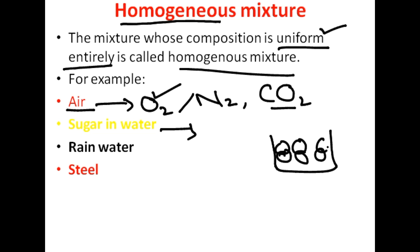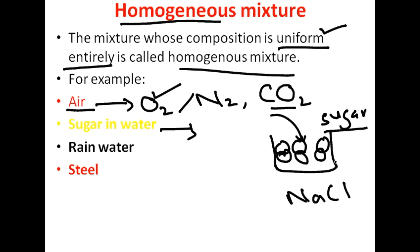Another example: if we dissolve sugar or NaCl in water, after it is completely dissolved you cannot observe where the sugar is unless you taste the water. Since we cannot physically differentiate the components, this is a homogeneous mixture — the word 'homo' means same, and the composition is entirely uniform.